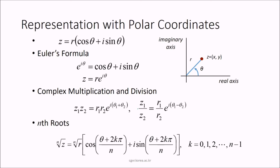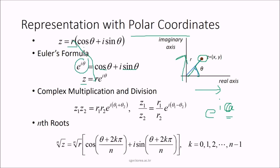In polar representation, z = r·cos(θ) + i·r·sin(θ). Using Euler's formula e^(iθ) = cos(θ)+i·sin(θ), we get z = r·e^(iθ). Multiplication: z1·z2 = r1·r2·e^(i(θ1+θ2)). Division: z1/z2 = (r1/r2)·e^(i(θ1−θ2)). The nth root is: ⁿ√r · [cos((θ+2kπ)/n) + i·sin((θ+2kπ)/n)], for k = 0 to n−1.